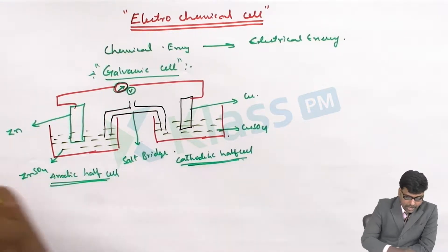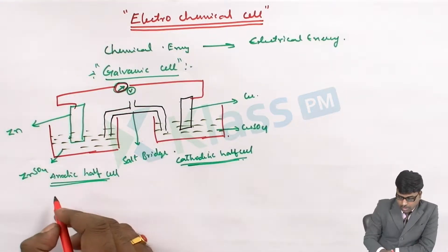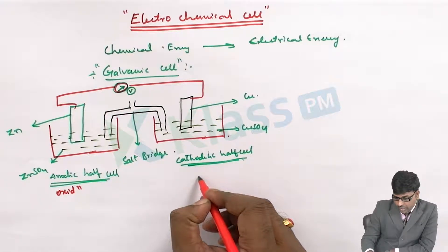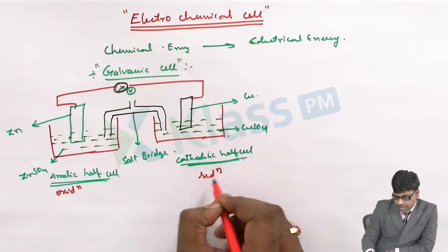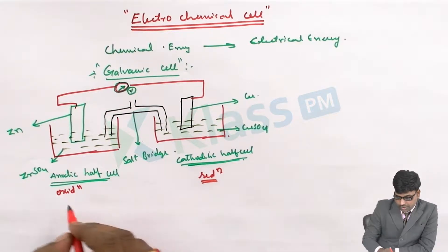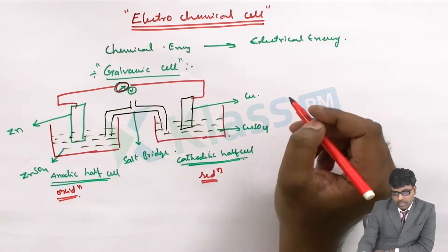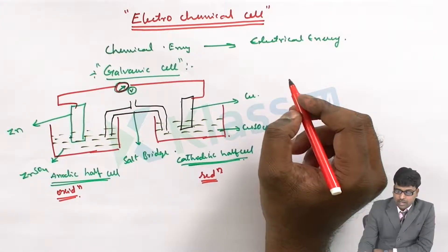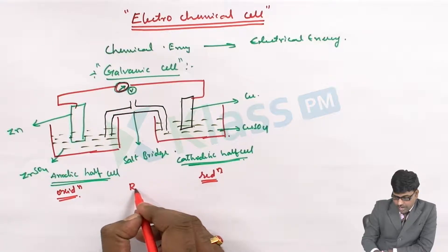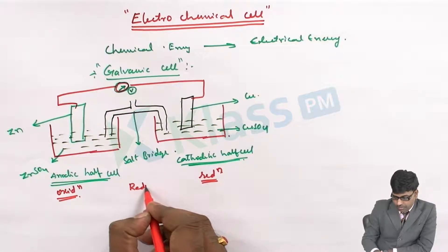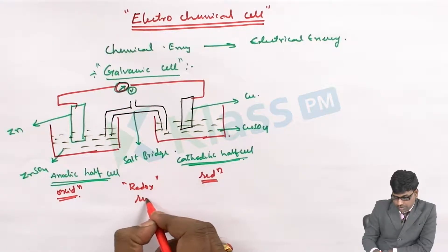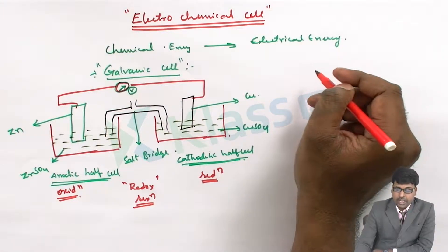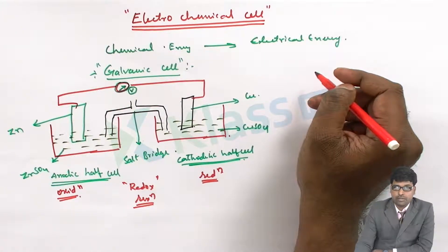In the anodic half cell, the oxidation reaction occurs. In the cathodic half cell, the reduction reaction occurs. Overall, in the electrochemical cell, a redox reaction happens — where the anode gets oxidized and the cathode gets reduced.